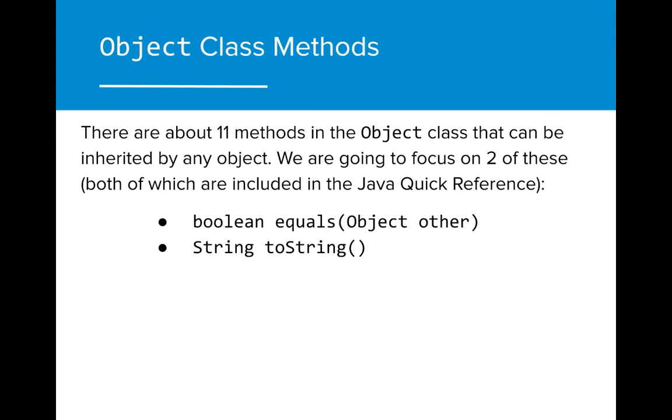While the object class has several different methods, in this course we are only going to focus on two: the equals and the toString method. Both of these methods are included in the Java Quick Reference Guide and should be familiar to you at this point.